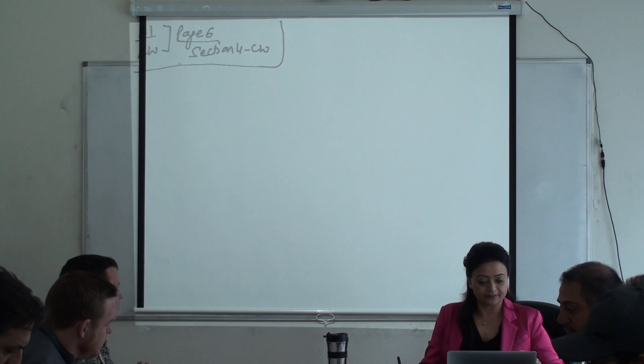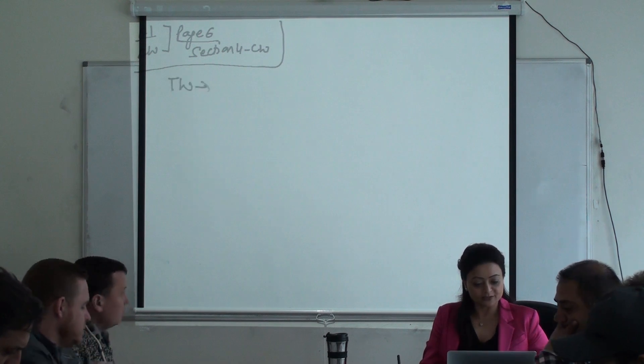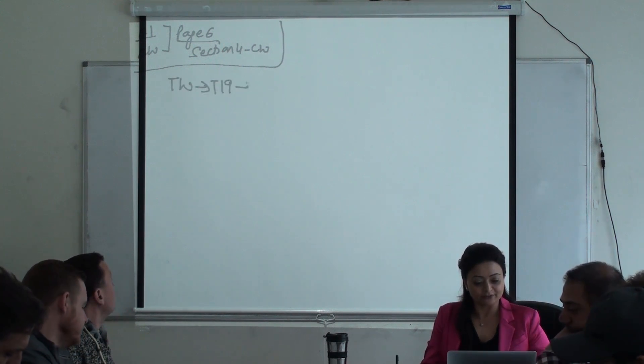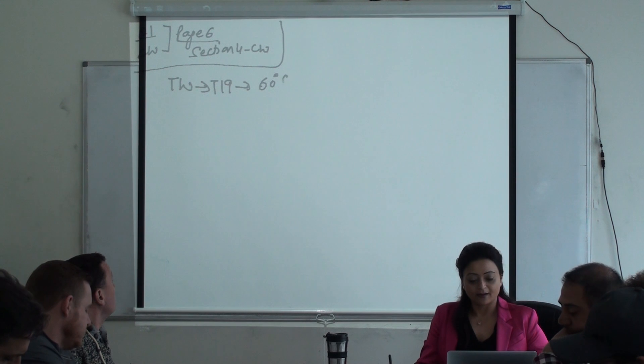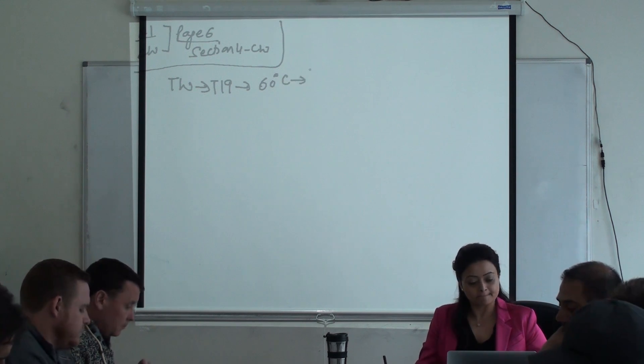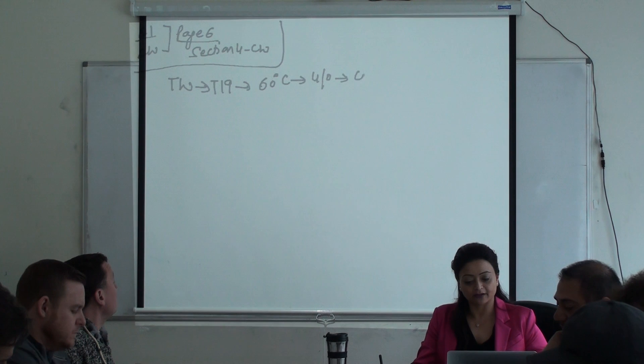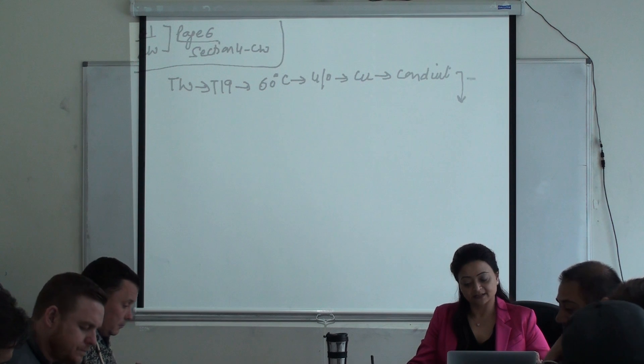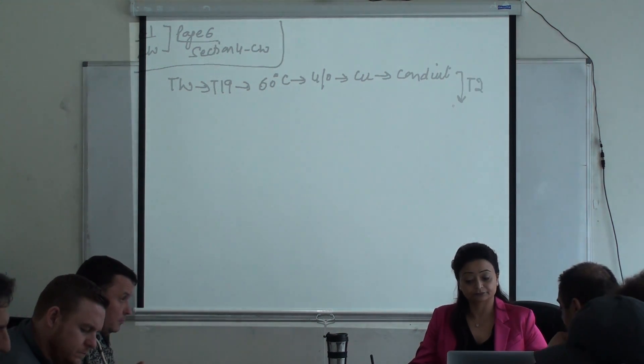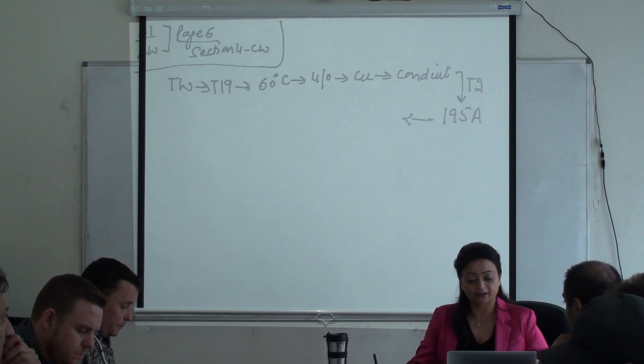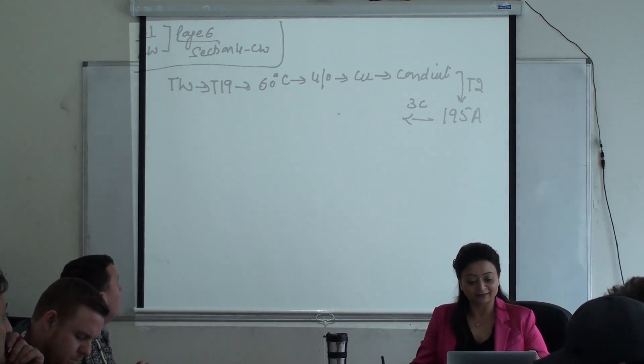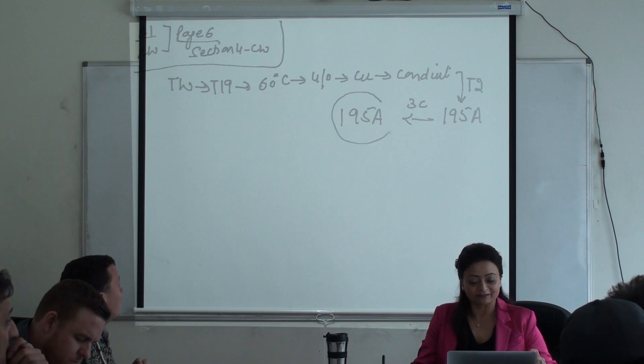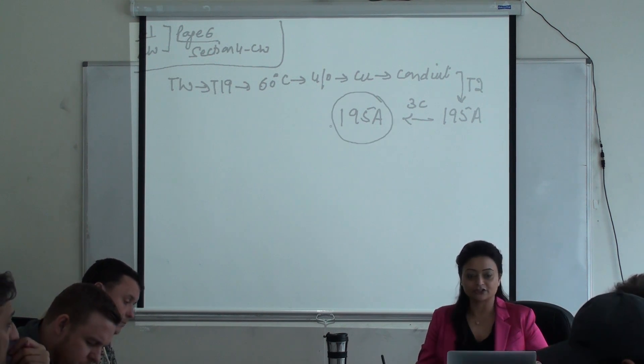It's given TW, which based on table 19, you guys know it's good for 60 degree C. What is the conductor size? Four AWG, copper or aluminum? Copper. Free air or conduit? Conduit. So we go to table two. What's my ampacity? 195. And how many wires? Three wires. So no derating factor, answer stays at 195.